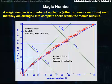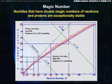These magic numbers are 2, 8, 20, 28, 50, and 82. Nuclides that have double magic numbers of neutrons and protons aren't exceptionally stable.